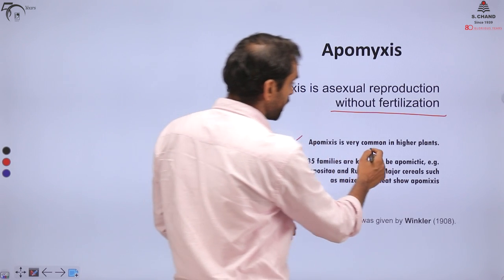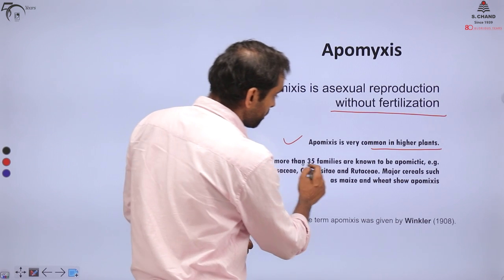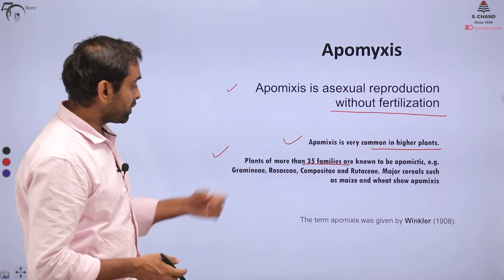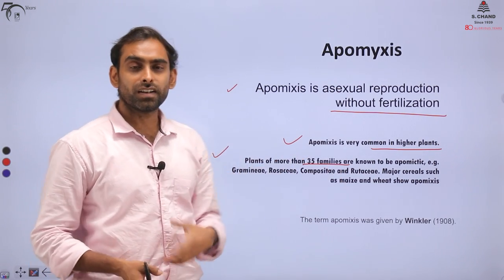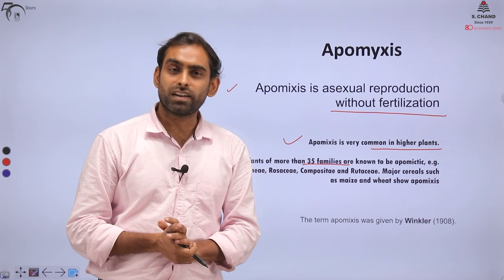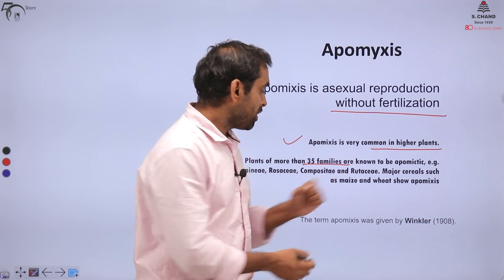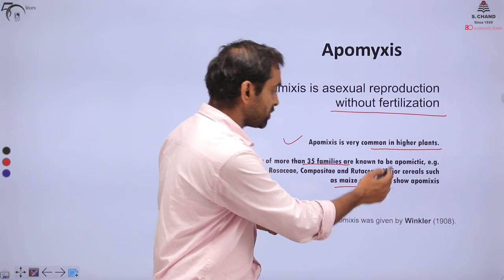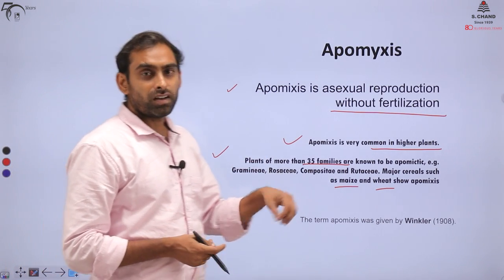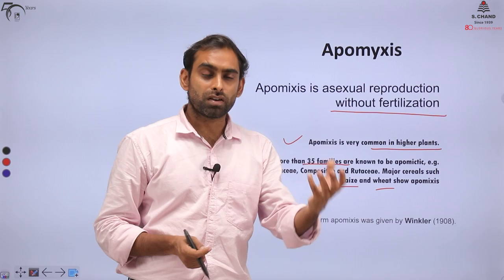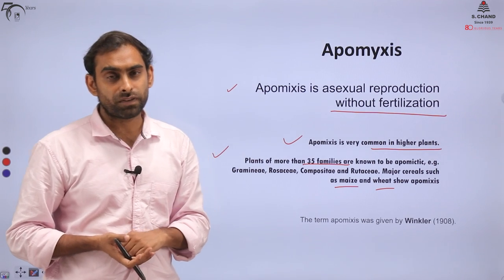Apomyxis is very common in higher plants — more than 35 families including Gramineae, Rosaceae, Compositae, and Rutaceae. There are many commercially used products in these families: millets, vegetables, and cereals like maize and wheat. Apomyxis represents the formation of an embryo or a complete fruit or seed without fertilization.